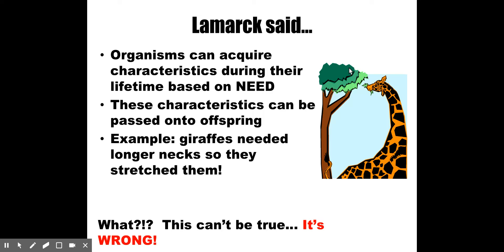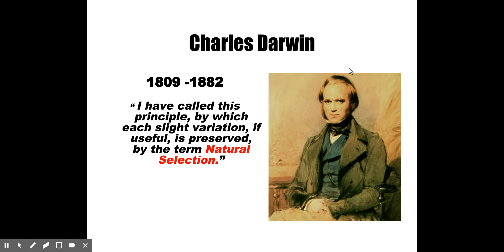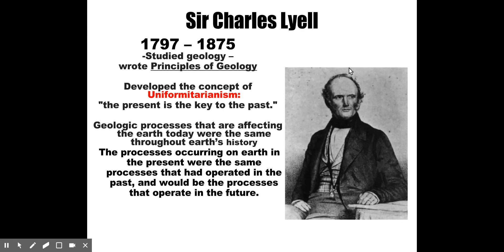This concept of acquired characteristics — that an organism can change its phenotype during its lifetime and then pass that trait to its offspring — is not supported by science. Here we get to Darwin. An interesting fact: Darwin was born on the exact same day as Abraham Lincoln, February 12th, 1809. A famous quote from Darwin is: 'I have called this principle, by which each slight variation, if useful, is preserved, by the term natural selection.' Nature chooses what traits get passed on and which do not.